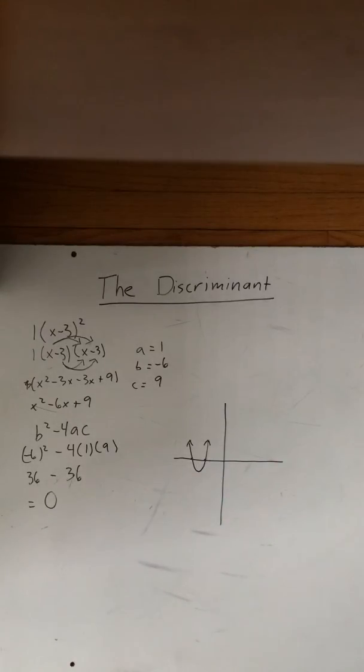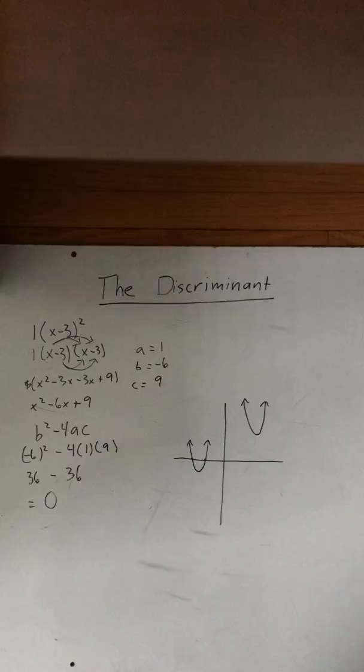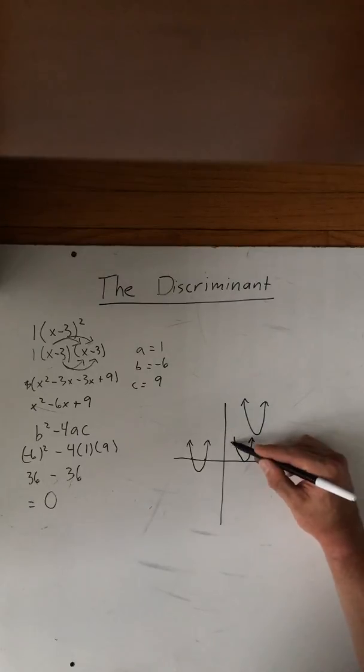If the discriminant is negative, there would be no x intercepts, which means it could be somewhere up here. As you see, it does not cross the x axis. And when the discriminant is zero, it tells us there is one x intercept, which means it touches once and only at one point and goes up.